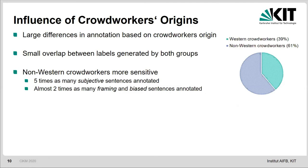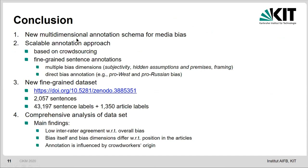To conclude, we presented a new multi-dimensional annotation schema for media bias and particularly news bias, used in a scalable annotation approach based on crowdsourcing for generating fine-grained sentence annotations with respect to multiple bias dimensions — namely subjectivity, hidden assumptions and premises, framing, and direct bias annotations. Our dataset is provided to the public and available on Zenodo. Given these 2,000 sentences, we have over 40,000 sentence labels and about 1,300 article labels, along with a comprehensive data analysis. Key findings include a low inter-annotator agreement on overall bias, different degrees of bias at different positions in articles, and annotations influenced by crowd workers' origins. Thank you for your attention.